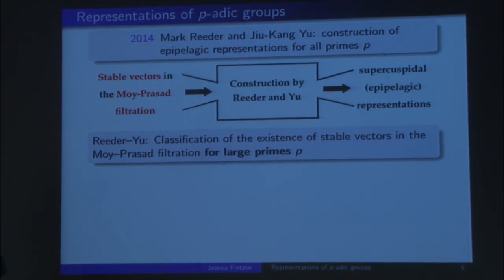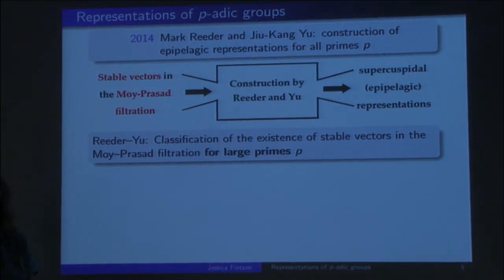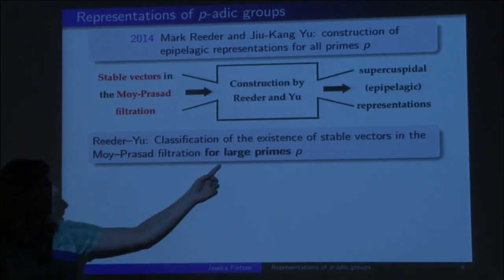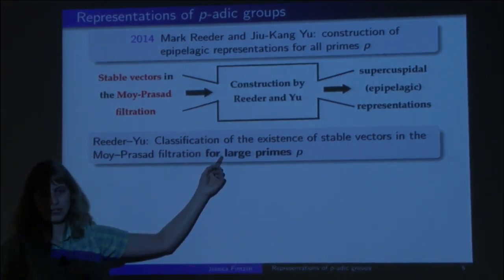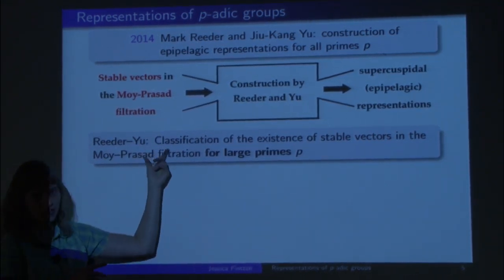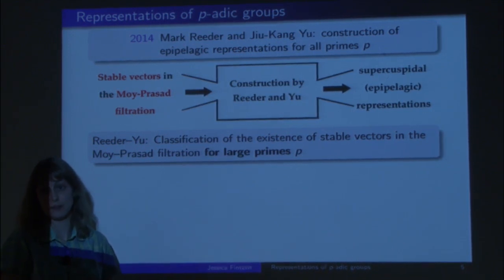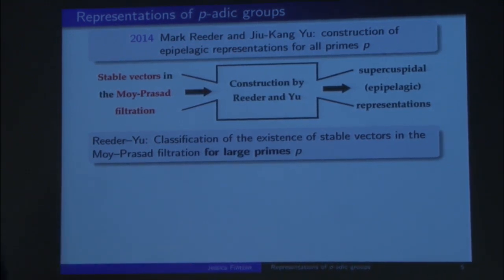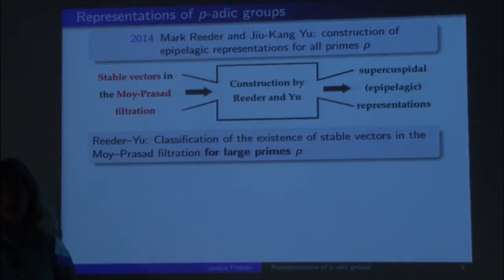The classification is really nice — it's in terms of combinatorial objects. Together with some collaborators, they showed precisely for each group where these stable vectors exist and where not, formulated in combinatorial terms that are independent of the prime P. But the result assumes that the prime P is large. Even though the classification itself doesn't see the prime, they heavily rely on it in the proof — which is a pity, because for very large primes we already know what's going on.